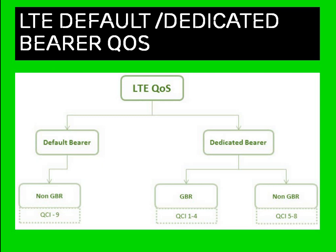We have two types — default and dedicated — and the QoS is different for both bearers. In the default bearer we have non-GBR (non-guaranteed bitrate). In the dedicated bearer you can do both GBR and non-GBR. There is also a term called QCI — QoS Class Identifier. For default non-GBR, QCI 9 is used. In dedicated bearer, for GBR we have QCI 1 to 4, and for non-GBR we have QCI 5 to 8.